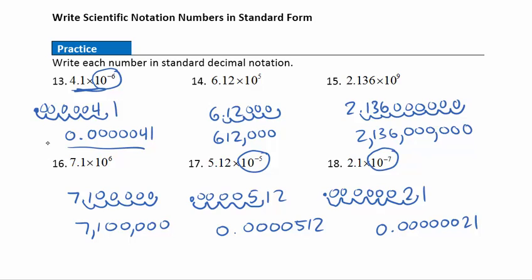One thing to note, especially for those going into health professions: every time we write a decimal number, always put a zero in front of the decimal point. In the health professions, it's really important to make sure we don't miss that decimal place so we don't make any medical calculation errors.